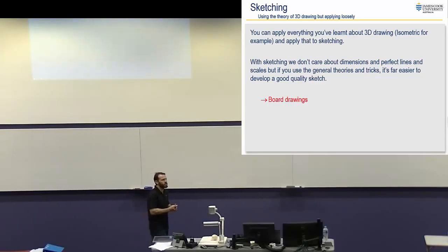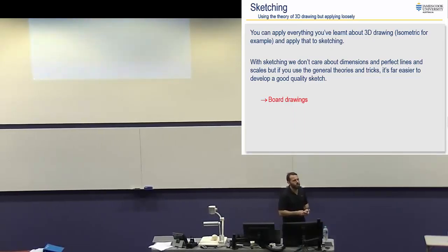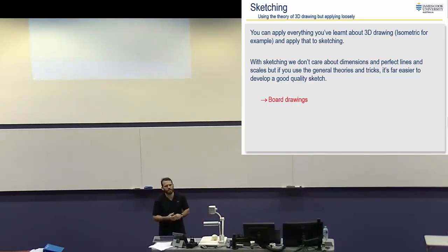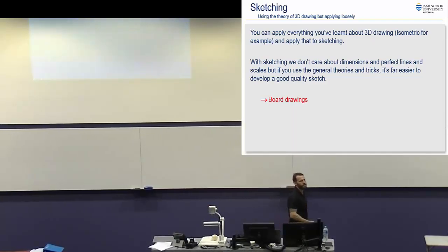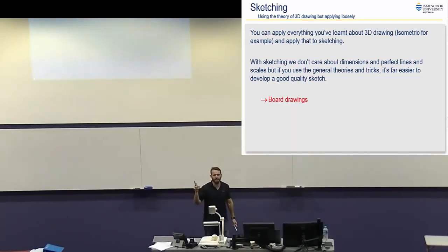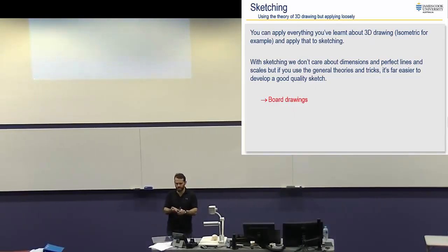All we care about is communicating an idea to whoever we're talking to. That can be a neat sketch that you might put in a design report, or it might be a completely terrible sketch that you use in a group meeting. The importance with sketching is: get it done quick in a group meeting, and communicate the idea. You can be forgiven for having really dirty lines and dirty sketches, so long as the person you're communicating with understands. Isometric and oblique cavalier are generally what you'd use for sketching because it gives you rules — an ability to do that sketch quickly in a way that is easily understood.